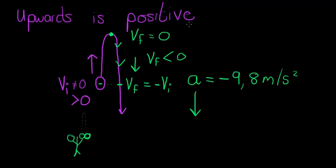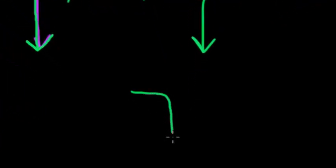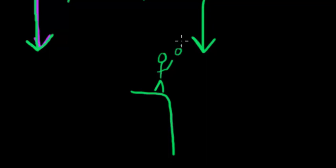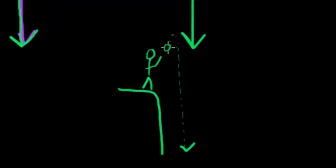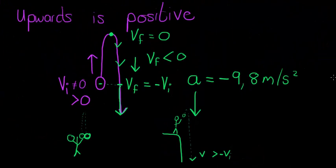If the object continues to fall further down — for example, if you are standing on a ledge throwing something up in the air and it falls further than the point from where you launched it — then the velocity at that lower point will actually be greater than the initial velocity, but in the negative direction.